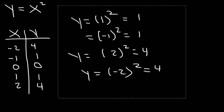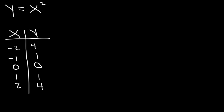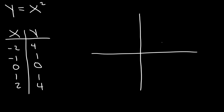And then you can plot it. The vertex is at the origin. We have the point (1, 1) and (-1, 1). And then we have the point (2, 4) and (-2, 4). And then we can graph it.